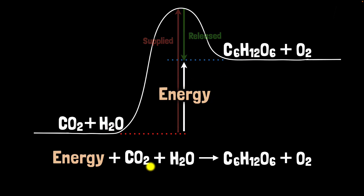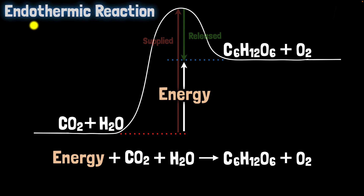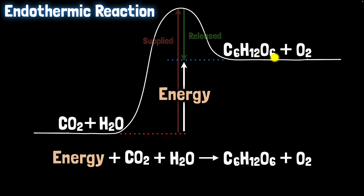Such chemical reactions where energy is absorbed are called endothermic reactions. The word 'endo' stands for energy going inwards — it's being absorbed by the reaction. And where is it going? It's getting stored as chemical energy in the product molecules. Now, quick question: what do you think would happen if we were to run this chemical reaction backwards?